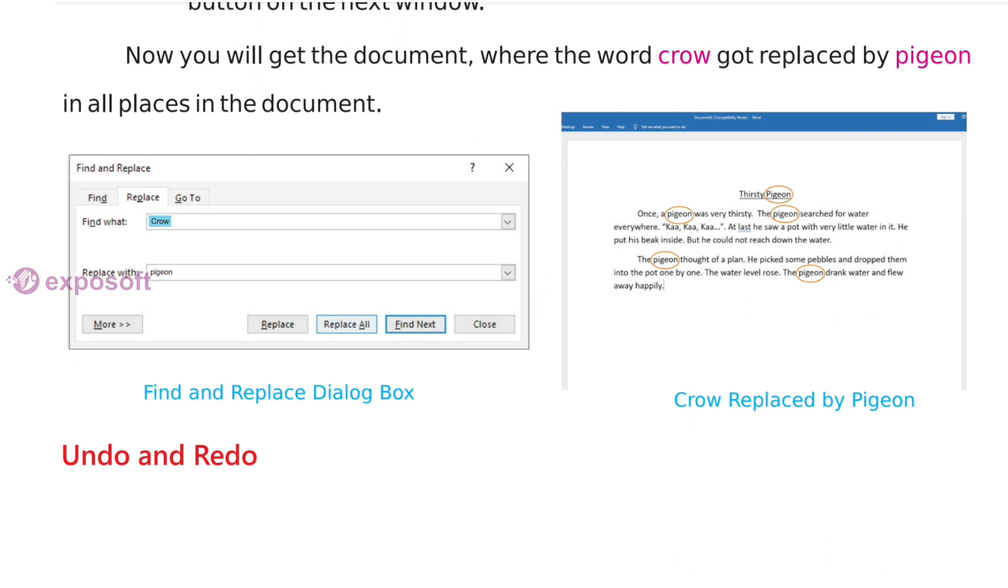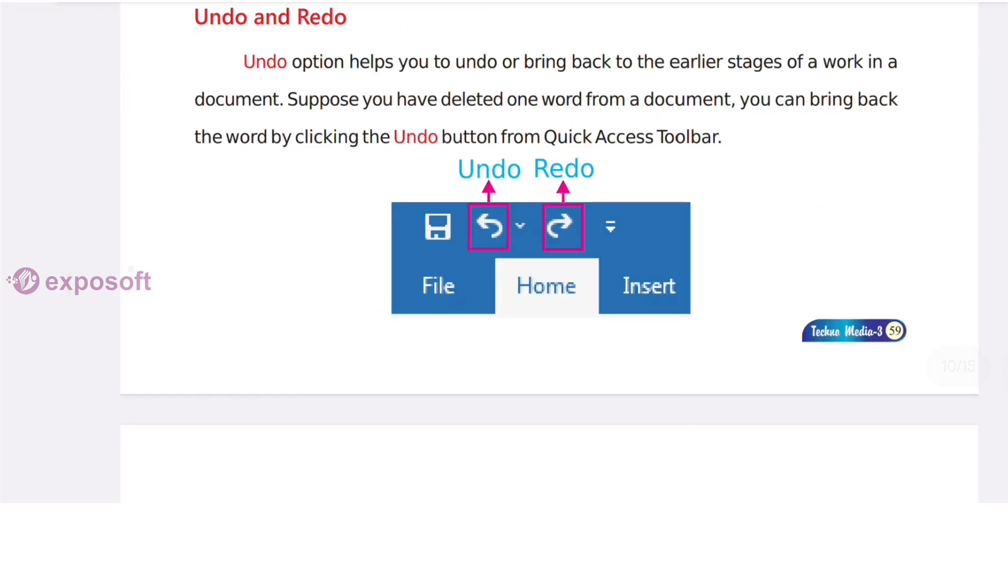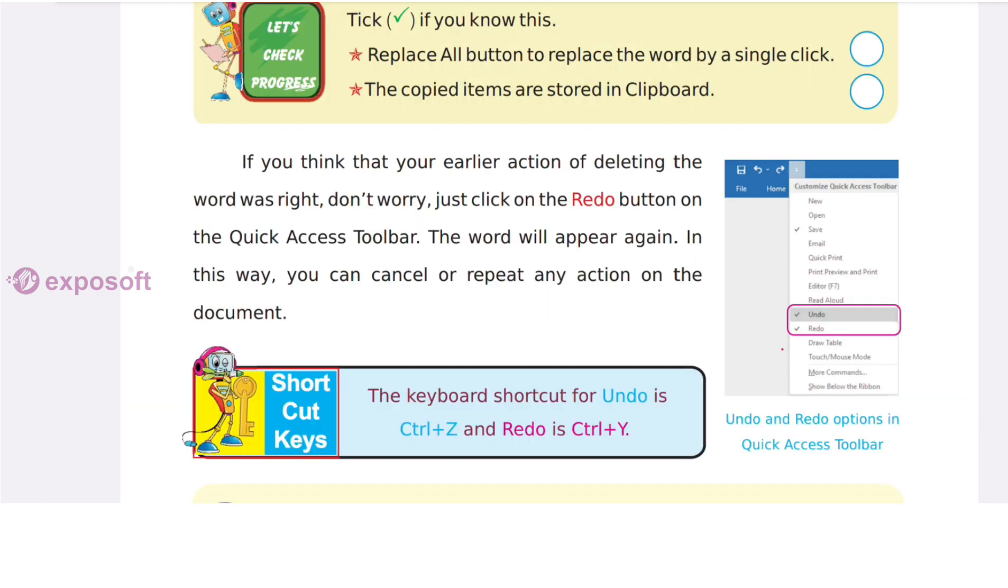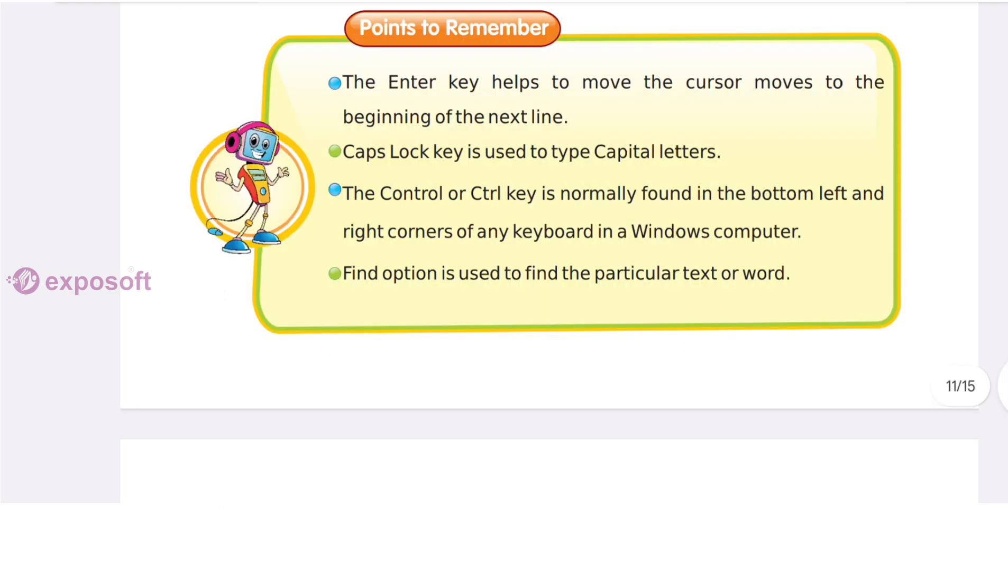Undo and redo. Undo option helps to undo or bring back to the earlier stages of a work in a document. Redo option helps to cancel or repeat any action on the document. That's all about this chapter. Thank you.